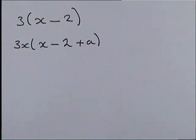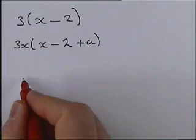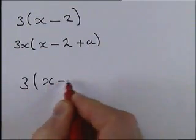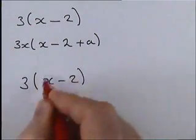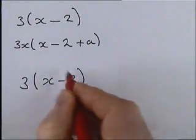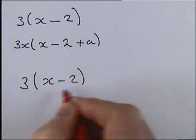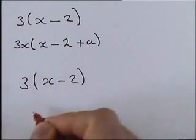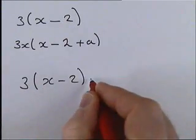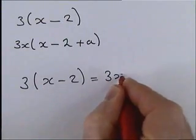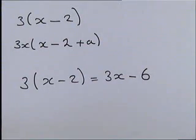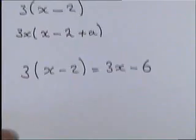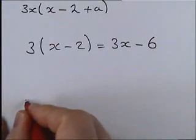For the first question we'll use the simple method: it's three lots of everything inside the bracket. The bracket contains two terms, x and minus two, so we need three lots of x and three lots of negative two. Three times negative two is negative six, giving 3x minus 6. Hopefully you got that one right.